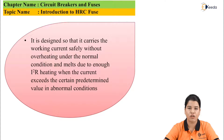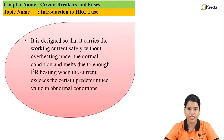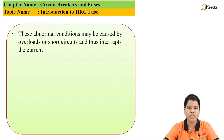When an abnormal condition occurs — that is, the fault current increases to a very high value — due to the increase in current, heat is generated and I²R loss causes the melting of the fuse element. Once the fuse element is melted, the faulty part of the system gets disconnected from the healthy part. Abnormal conditions in the power system can be caused by overloads or short circuits, which will cause the interruption of the system.